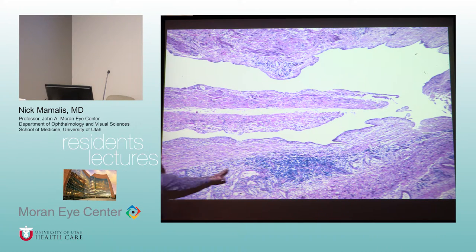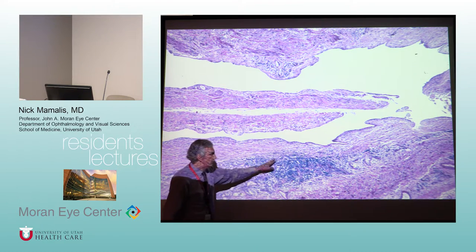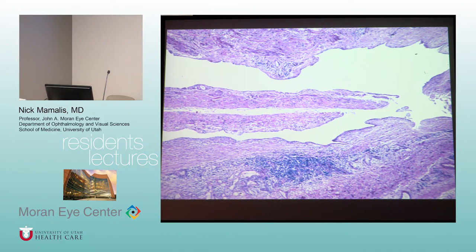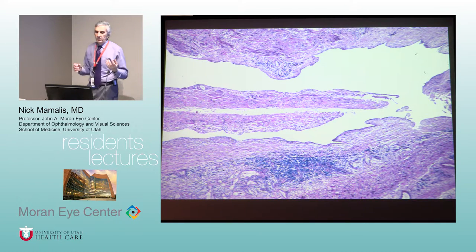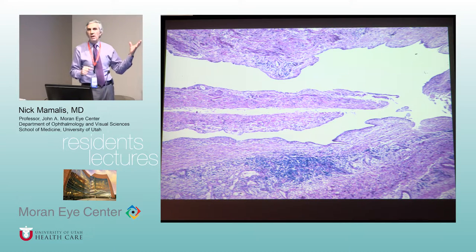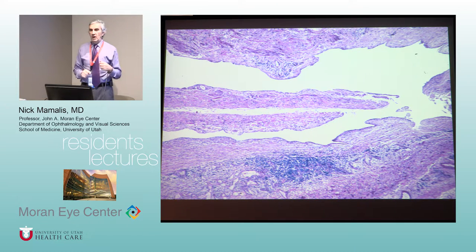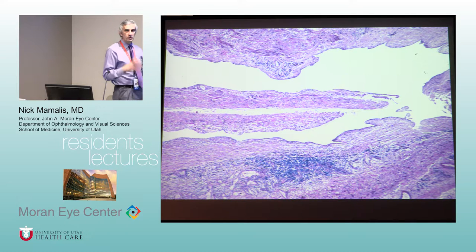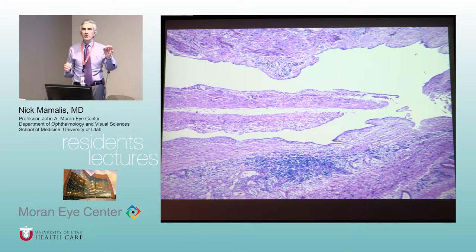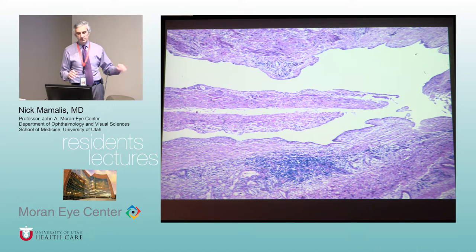In lymphangioma you also see patches of lymphocytes around the channels. When kids get a viral upper respiratory infection, the lymphocytes proliferate, the cysts get really big, and proptosis increases rapidly. These are not encapsulated so you can cause more damage trying to remove them. When explosive proptosis occurs from a large cyst, doctors will use CT- or ultrasound-guided needles to drain the cysts rather than doing open surgery, which allows the acute period to pass.